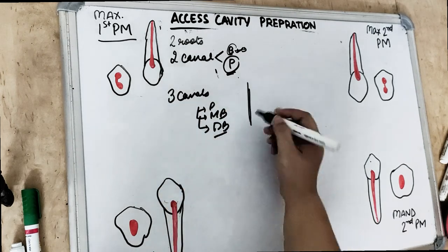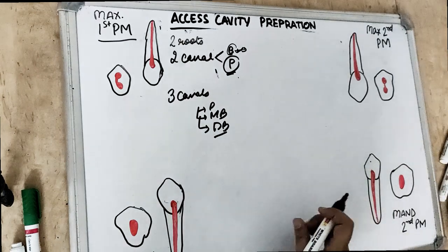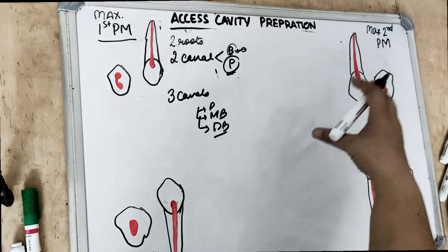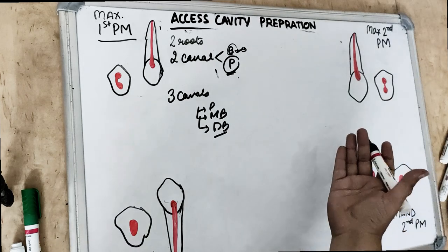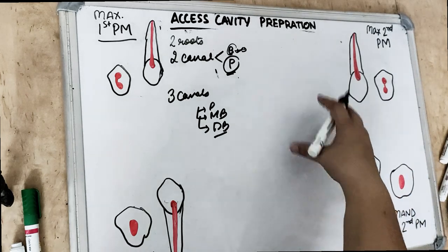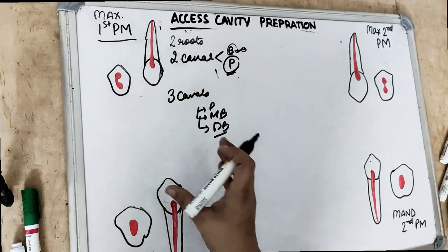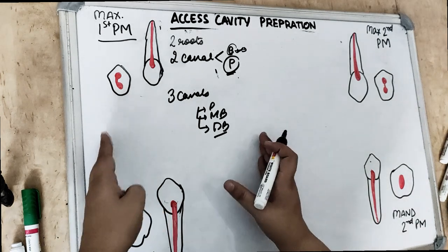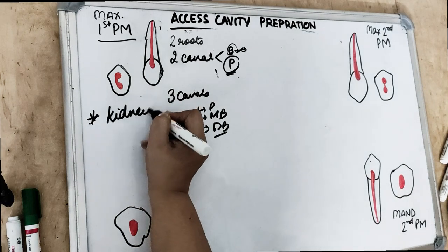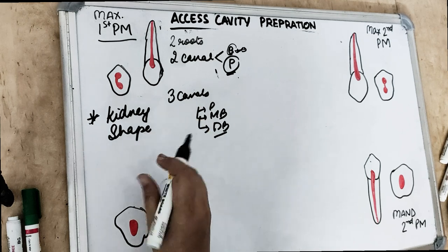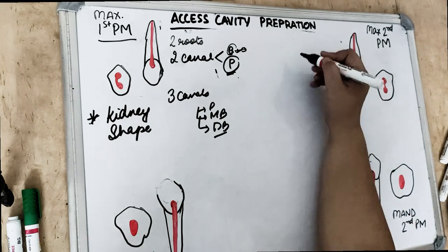The root canals are straight line and divergent, so there is no difficulty in making a straight-line access for the maxillary first premolar. Coming to the maxillary second premolar — they have two pulp horns and the buccal pulp horn is larger, same as the maxillary first premolar. The orifices and pulp floor are similar — elliptical or kidney shape, but less pronounced compared to the maxillary first molar. The maxillary first molar has a typical kidney shape or elliptical orifice.